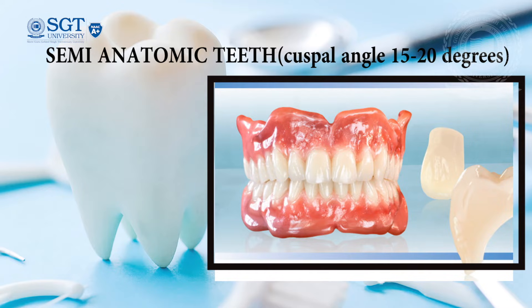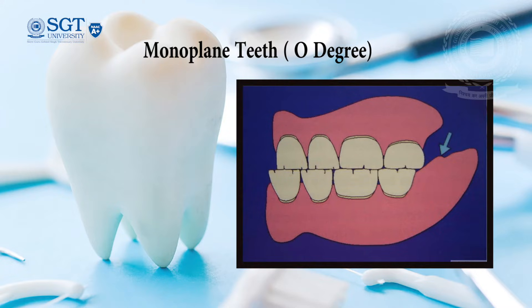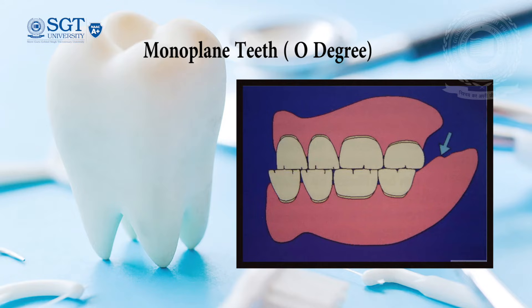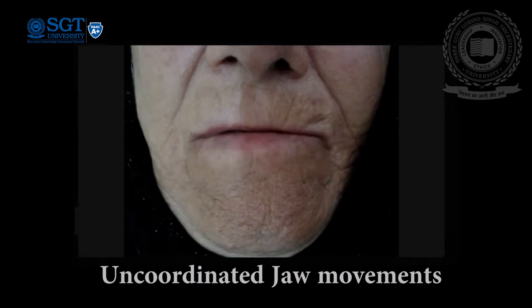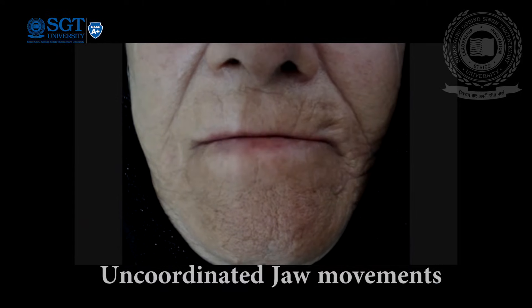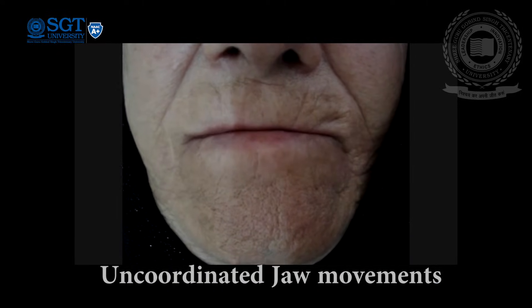Semi-anatomic teeth have a shallow cuspal angle of around 15 to 20 degrees. Non-anatomic teeth have a 0 degree cuspal angle and are used in patients who have severely resorbed ridges, jaw size discrepancies such as class 3 patients, uncoordinated jaw movements, or patients with poor neuromuscular control.